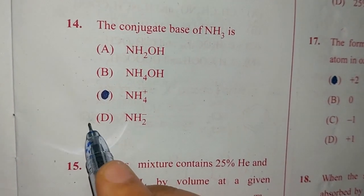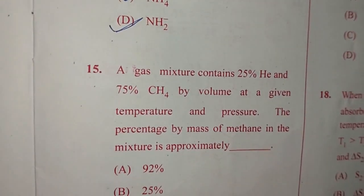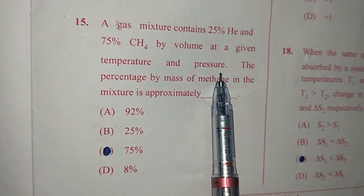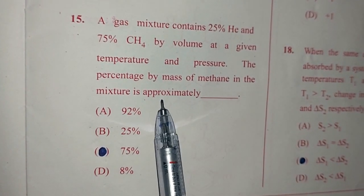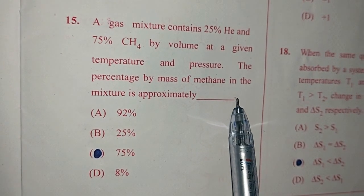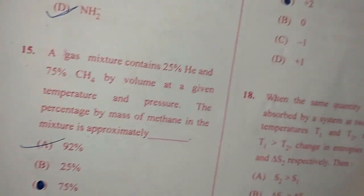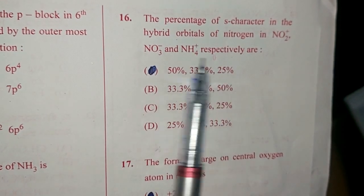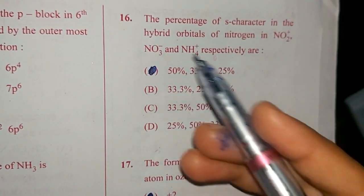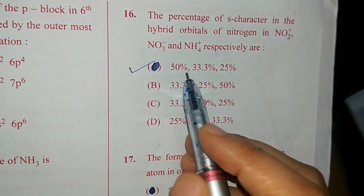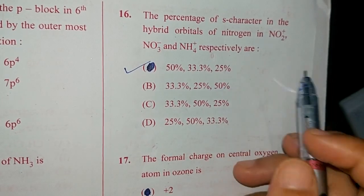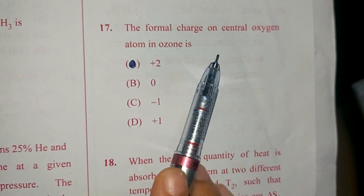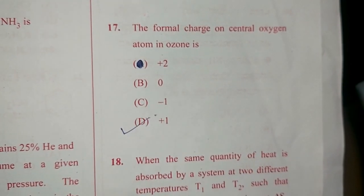The conjugate base of NH3 is NH2 minus, option D. Question number 15. A gas mixture contains 25% helium and 75% methane by volume at a given temperature and pressure. The percentage by mass of methane in the mixture is approximately 92%, answer is option A. Question number 16. The percentage of S character in the hybrid orbitals of nitrogen in NO2+, NO3-, NH4+ respectively are option A: 50%, 33.3% and 25%.